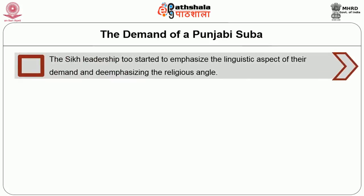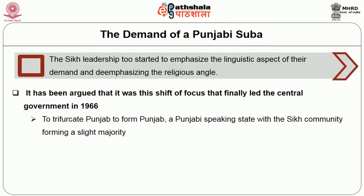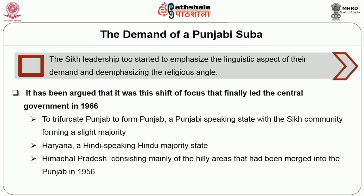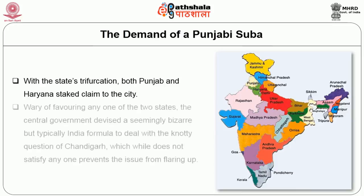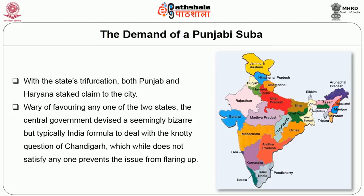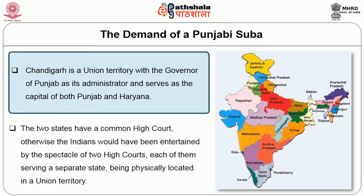With the demand for Punjabi Subha came key questions: whether Punjabi was a distinct language or merely a dialect of Hindi, and whether it was only the language of Sikhs or also of Hindus. Concerns among Hindus led to a movement on the eve of the 1961 census to declare Hindi instead of Punjabi as their mother tongue, attempting to undermine the demand. The demand became more strident in late 1965 with Master Tara Singh and Sant Fateh Singh taking the lead. After the 1965 war with Pakistan, the central leadership realized the danger of letting such a sensitive issue simmer in a strategically crucial border state. Finally in 1966, Punjab was trifurcated: a Punjabi-speaking Punjab with a Sikh majority, a Hindi-speaking Hindu-majority Haryana, and Himachal Pradesh consisting of hilly areas. Chandigarh became a union territory serving as the capital of both Punjab and Haryana.